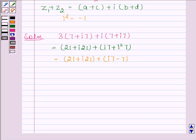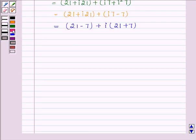We take the real and imaginary parts in separate brackets applying the rule for addition of two complex numbers. We have (21-7) + i(21+7). And this is equal to 14 plus 28i.